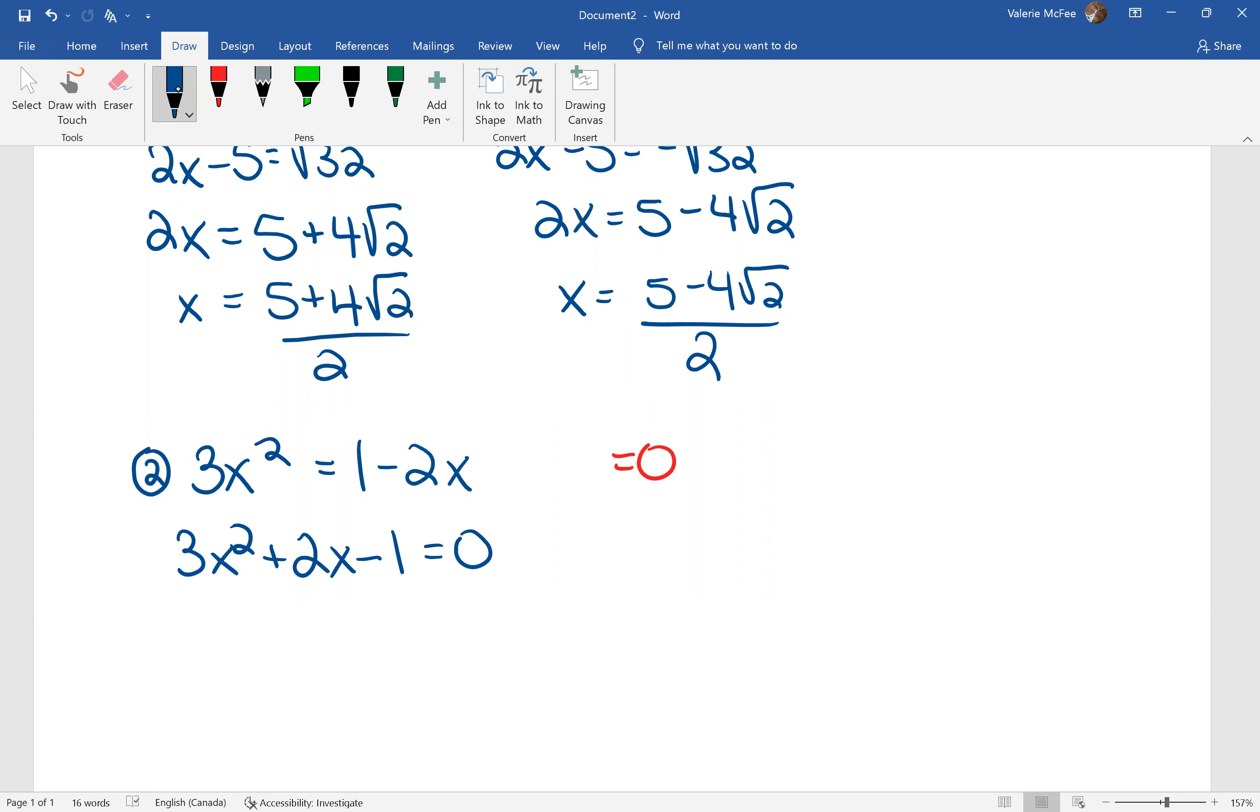I'll go through the whole factoring method here that you've probably been practicing. We want two numbers that multiply to equal a times c or negative three and that add to equal two. We know that one times three will give us three. One of them has to be negative. So we're going to split the middle term using those numbers.